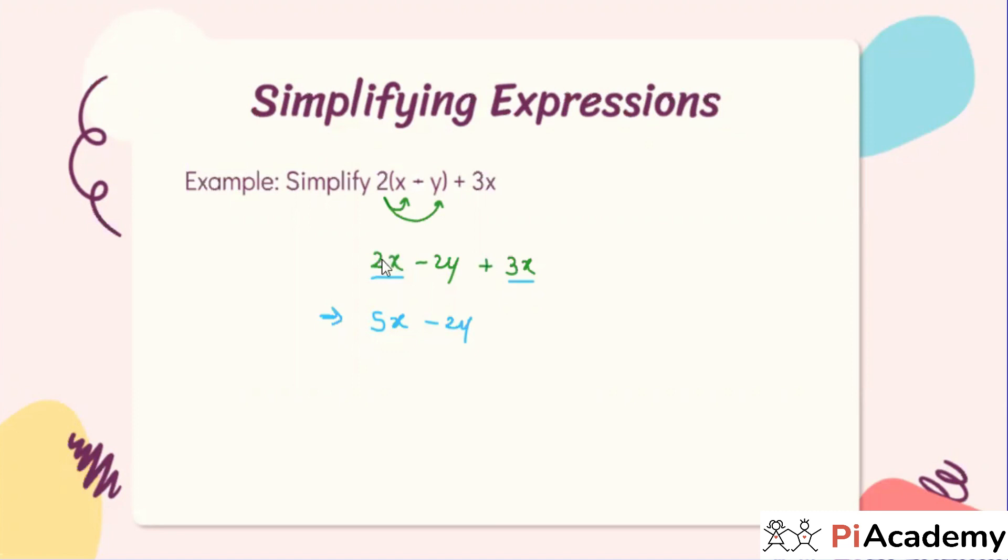My doubt is that when you did 3x plus 2x minus 2y, you got the answer 5x minus 2y. But then I didn't do that. I just left it as 2x minus 2y plus 3x. Okay, so you have stopped here only, right? So that is a little bit wrong.